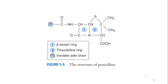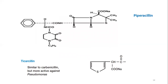First, I'm showing you the typical structure of penicillin. It consists of two rings: the first is the beta-lactam ring and the second is the thiazolidine ring. It also has a variable side chain, and modifications are made to this variable side chain. So why were extended spectrum penicillins introduced?